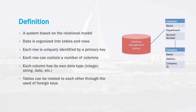A relational database is a system built for data storage and retrieval that's based on the relational model. In the relational model, data is organized into a series of tables with rows and columns of data. Each row in a table is uniquely identified by a primary key. In addition, a row can contain a number of columns similar to the typical design of a spreadsheet row.